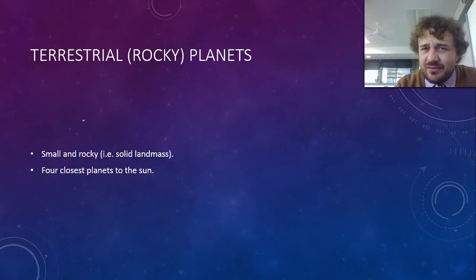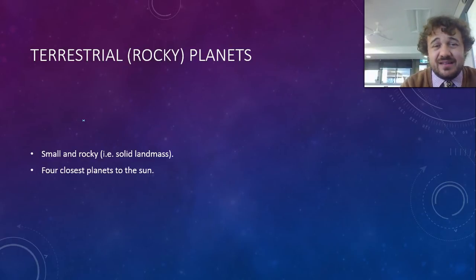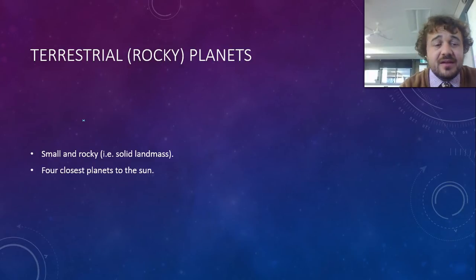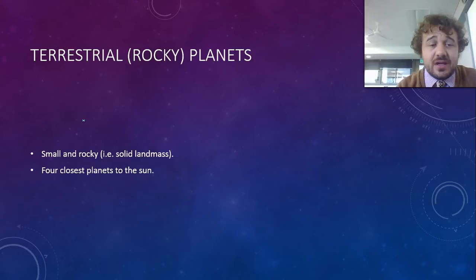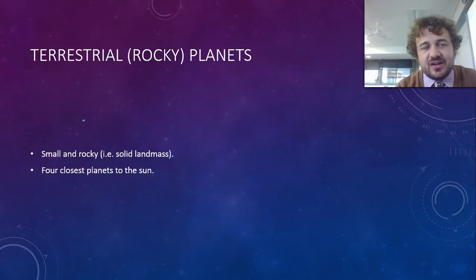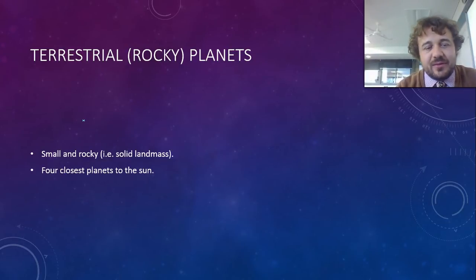We don't need you to write down much — just write down what we've had so far and this next bit; don't worry about the pictures. So, the terrestrial planets — 'terrestrial' means rocky, so small and rocky, which means it's solid. Essentially a solid chunk of landmass, and you'll see what we mean when we talk about ones that aren't. They are the four closest planets to the Sun.